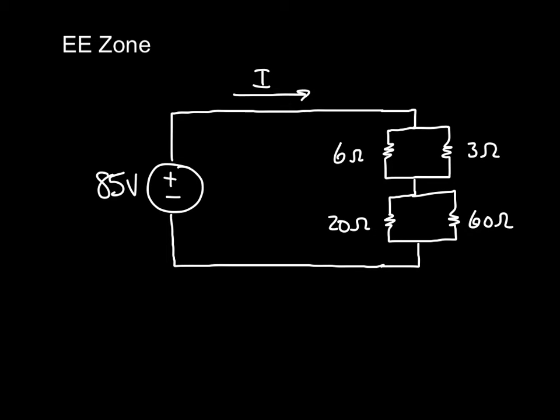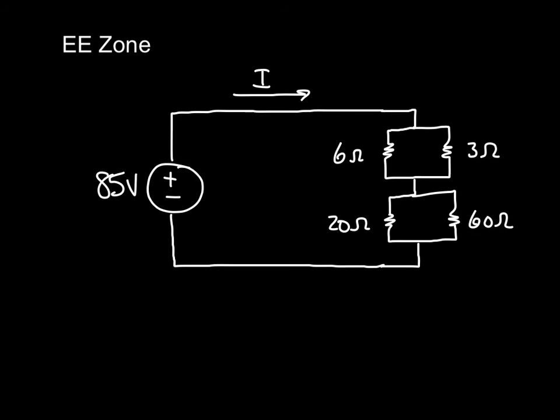So what we need to do now is find the total resistance of the circuit. Here we've gone ahead and we're just looking at the total resistance of the circuit, and we need to manipulate this with a little bit of mathematics. So here I've labeled these parallel branches as R1 and these parallel branches as R2. The math is straightforward. R1 is equal to 6 times 3 over 6 plus 3, or 2 ohms. And R2 is equal to 20 times 60 over 20 plus 60, or 15 ohms.